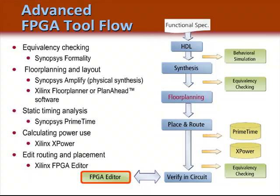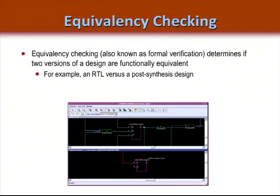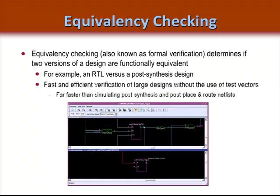Now, we'll talk about some of these tools a little later in the presentation. Equivalency checking, also known as formal verification, determines if two versions of the design are functionally equivalent by comparing an RTL netlist and a post-synthesis netlist. This provides for fast and efficient verification of large designs without the use of test vectors.